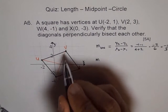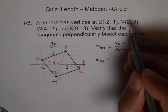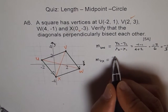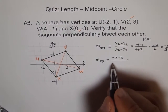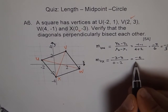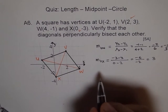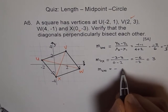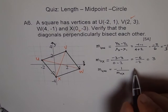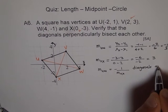Let's find slope of VX. For V(2, 3) and X(0, -3): (-3 - 3) / (0 - 2) = -6 / -2 = 3. As you can see this is the negative reciprocal, since m_UW equals -1 over m_VX. Therefore the diagonals are perpendicular.